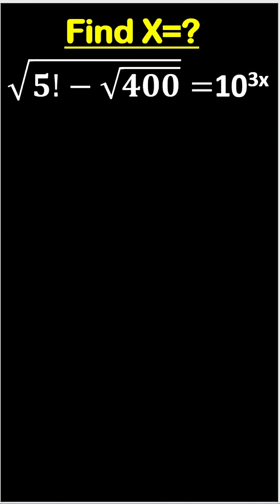Find x. We have square root of 5 factorial minus square root of 400 equals 10 to the power 3x.